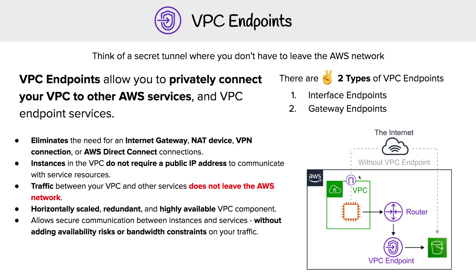So let's say we didn't need this internet gateway — the only reason we were using it was to get to S3. We can now eliminate that and keep everything private.